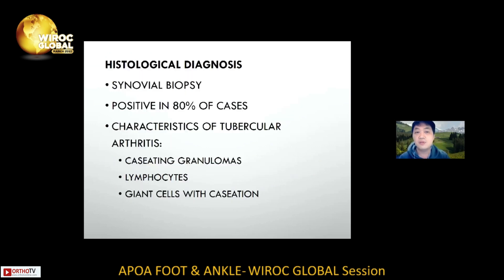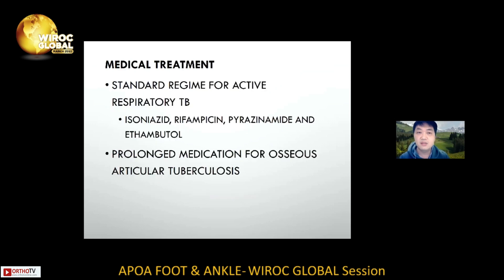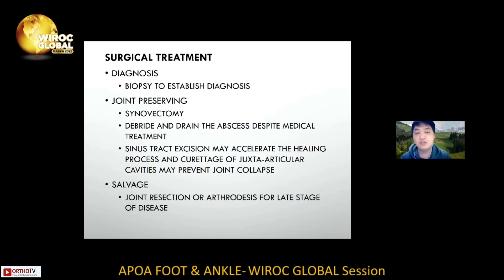Histology also provides clues, and is positive in about 80% of cases. Characteristic histological findings include caseating granuloma, lymphocytes, and giant cells with caseation. Regarding treatment, the standard is multi-drug anti-TB medication, and for extra-pulmonary TB, a longer course is required. Surgically, procedures can be used for diagnosis such as biopsy, and synovectomy with debridement and sinus tract excision may help preserve the joint. For late-stage joint destruction or deformity, joint arthrodesis or arthroplasty may be considered.